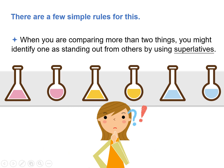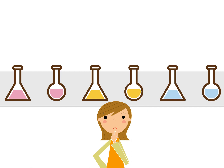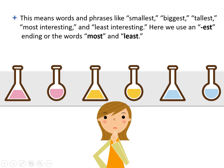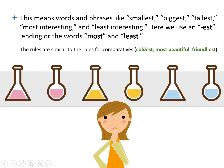When you are comparing more than two things, you might identify one as standing out from others by using superlatives. This means words and phrases like smallest, biggest, tallest, most interesting, and least interesting. Here we use an EST ending or the words most and least. The rules are similar to comparatives: coldest, most beautiful, friendliest.